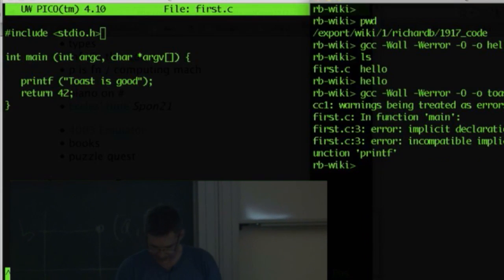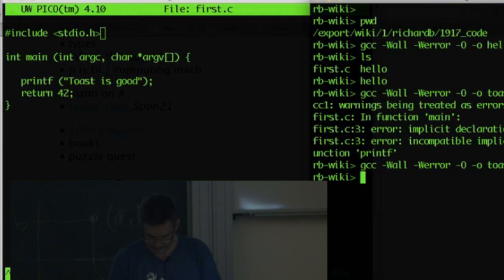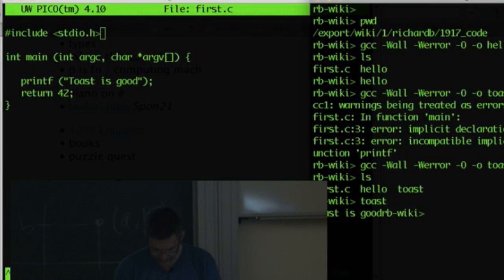So let's see there, let's see if it compiles. Woohoo! It worked. And now if I go, what was the name of my function again? Let's have a look. Ls, it's called toast. Toast is good, rb wiki.